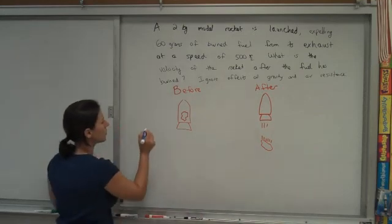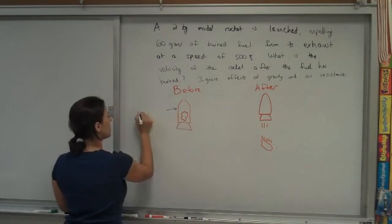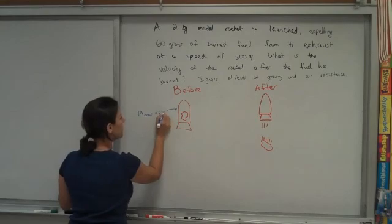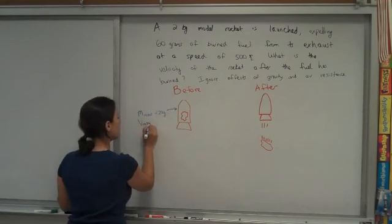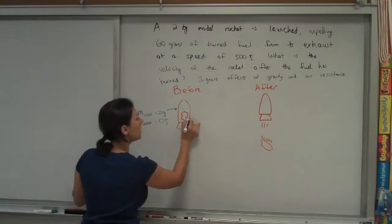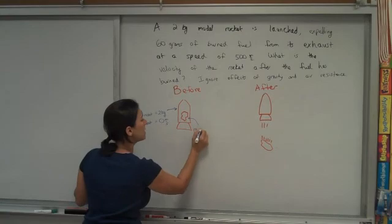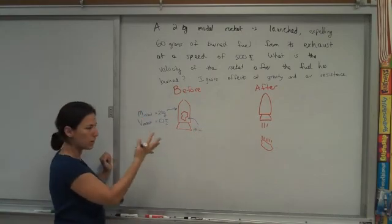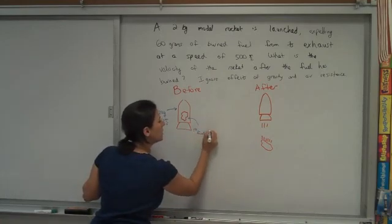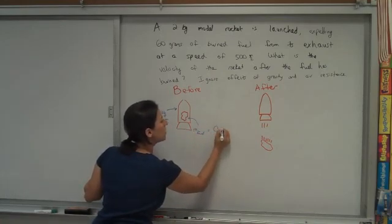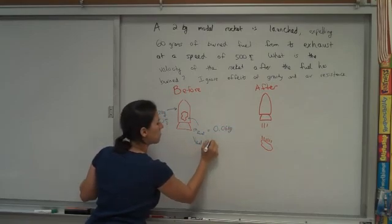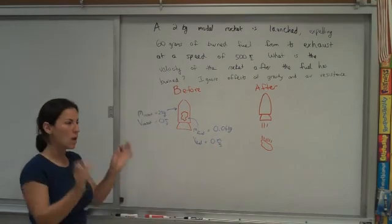So beforehand, the mass of the rocket itself is 2 kilograms. And the velocity of the rocket beforehand is 0, not moving. And the fuel on the inside, the mass, is 60 grams. So we're going to have a mismatch here between kilograms and grams. So I'm just going to go ahead and convert that and keep it all in kilograms. And so it's 60 grams, and I write 0.06 kilograms. And the fuel, to begin with, not moving either. That's all beforehand.